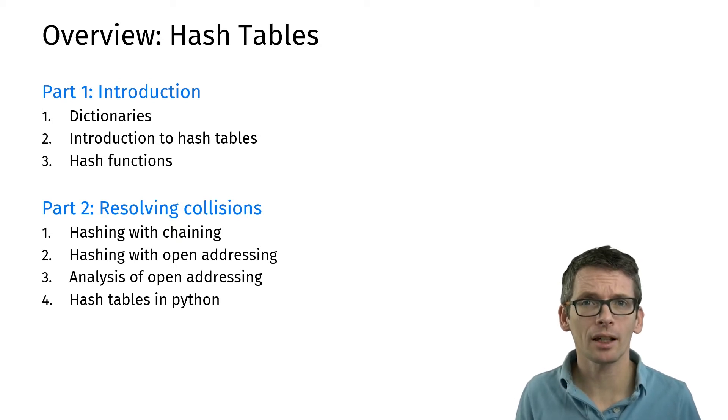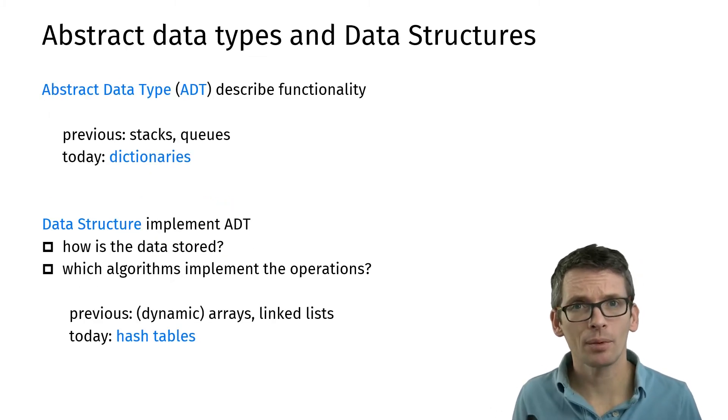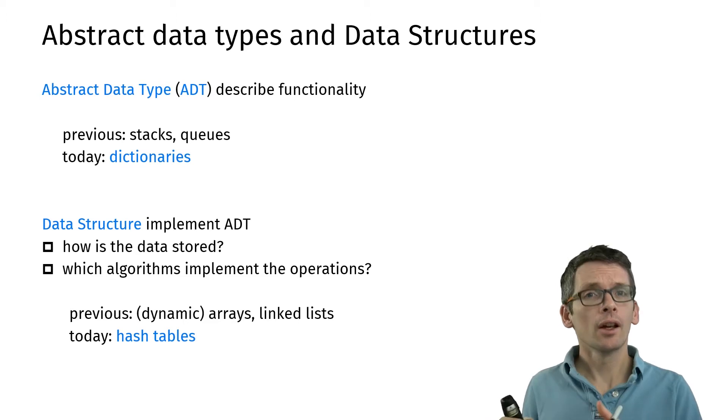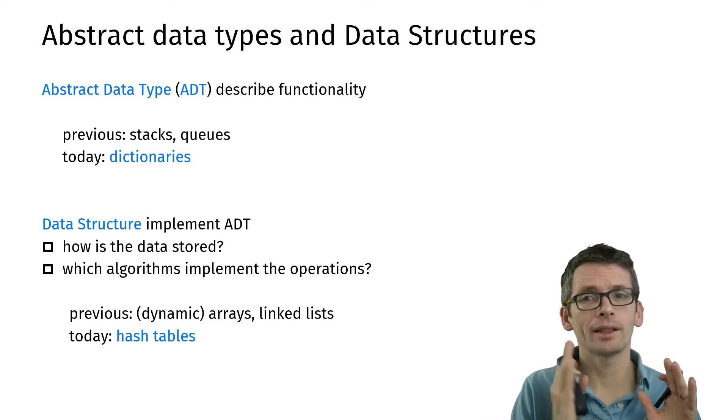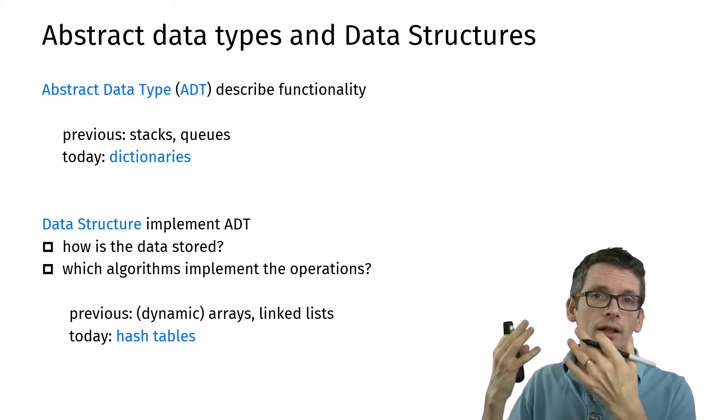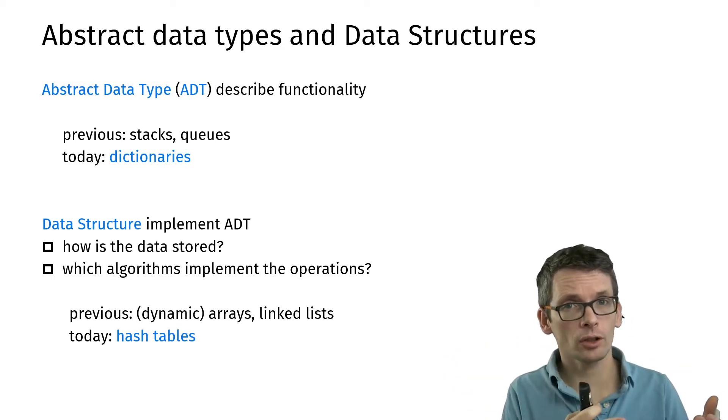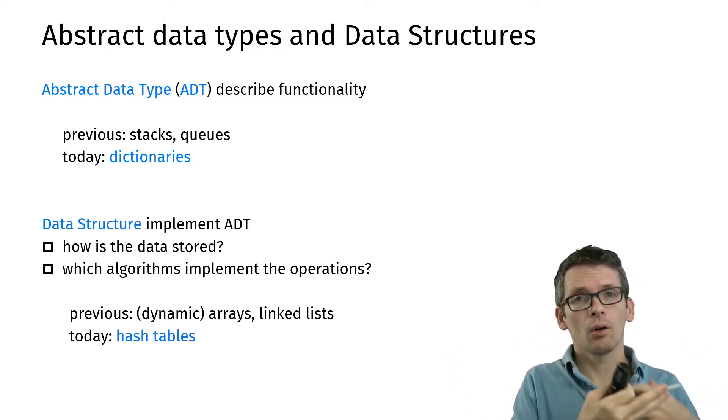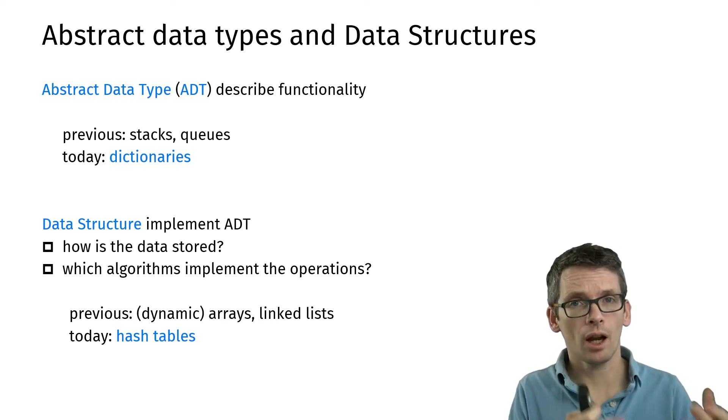So what do I mean by an abstract data type? An abstract data type simply describes the functionality that we would want to have from a data structure. The abstract data type tells us what we want to have, and then the data structure tells us how we get it, how we implement the operations, how we store the data.